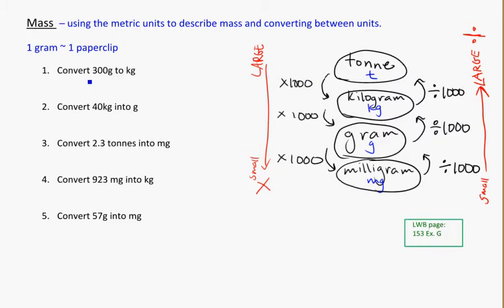Converting 300 grams to kilograms — I want to go from grams up to kilograms. Because I know there are 1,000 grams in one kilogram, I need to divide. So my answer is 300 divided by 1,000, which is 0.3 of a kilogram. That should make sense — it's not yet one whole kilogram because I need 1,000 grams to get one kilogram, so it should be smaller: 0.3 of a kilogram.